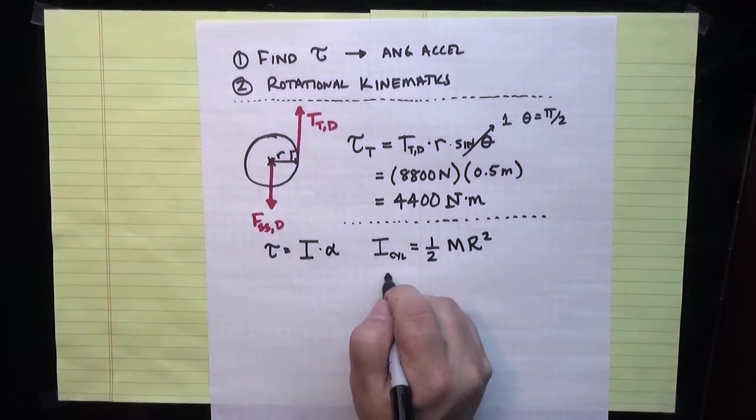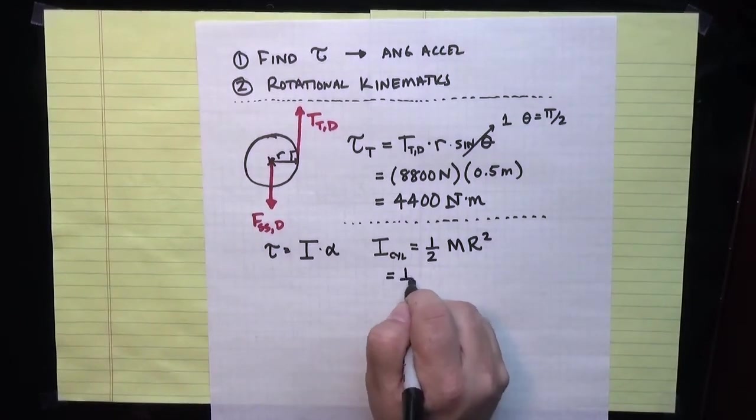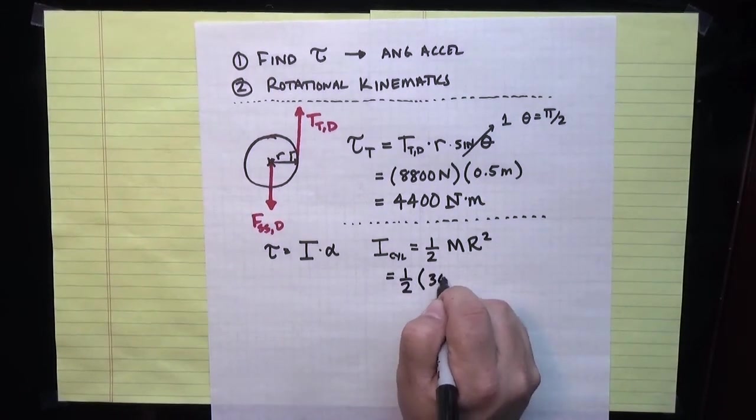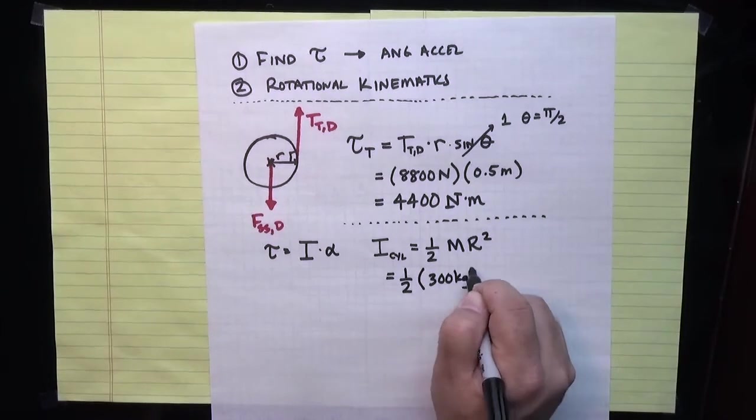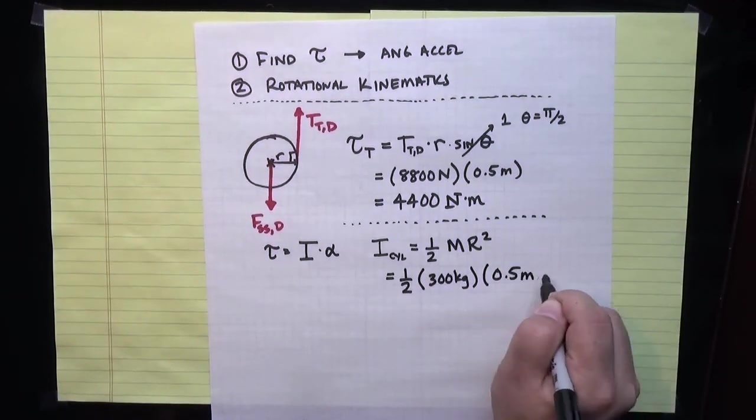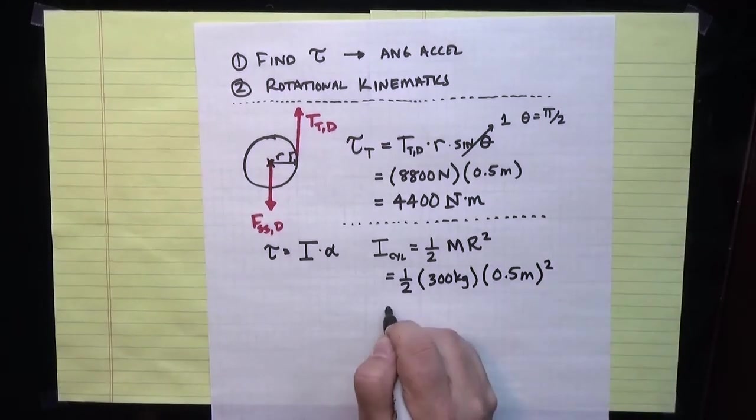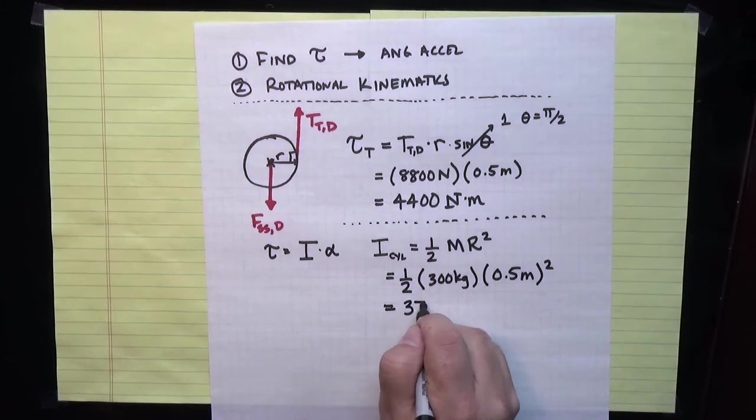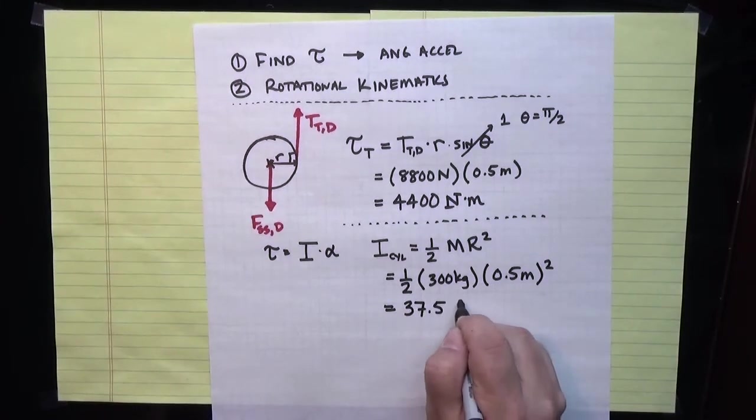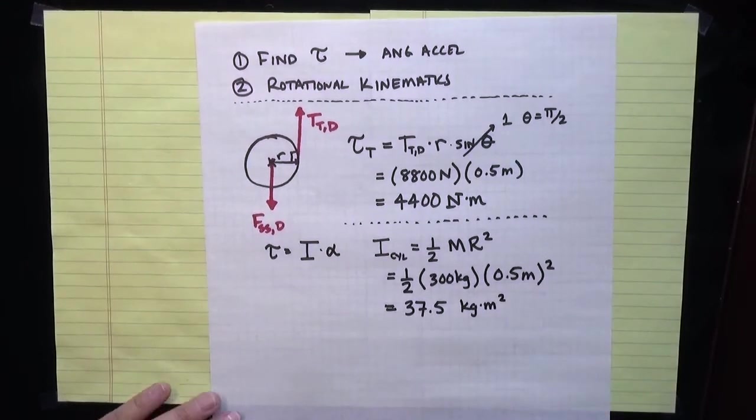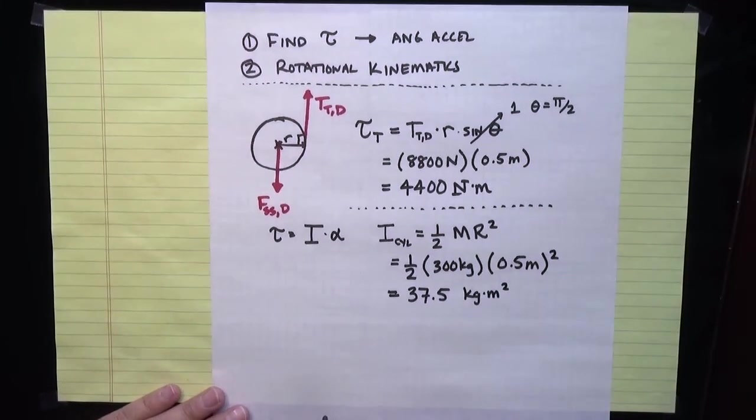If I put in the properties of the drum, it's a half times the mass of the drum, which we're told is 300 kilograms, and we're told that the radius of the drum is 0.5 meters squared. So overall, the moment of inertia of the drum is 37.5 kilogram meters squared.